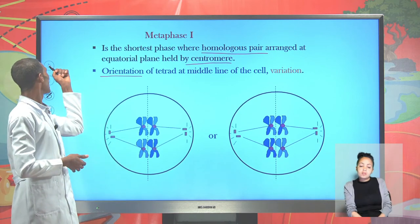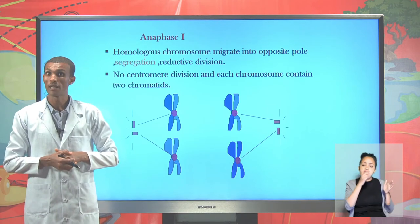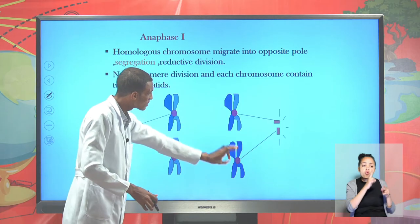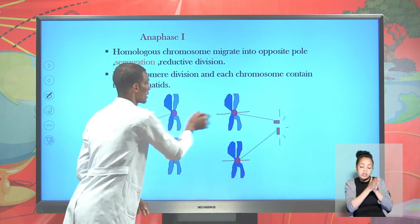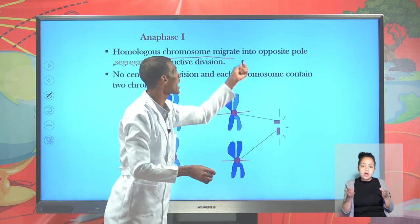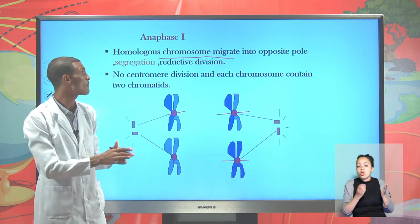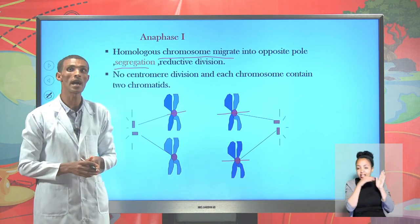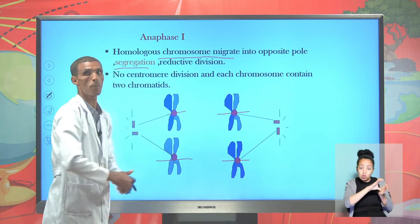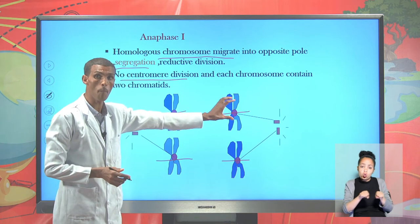Another important phase of meiosis I is Anaphase I. During Anaphase I, spindle fibers move homologous pairs — still attached by the centromere — to opposite poles of the cell. When homologous pairs become segregated and separate from each other, the copy and original move to opposite poles while still attached by the centromere. There is no separation of the centromere — the centromere still joins the copy and original of each homologous pair.